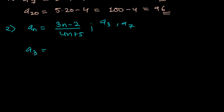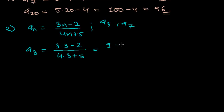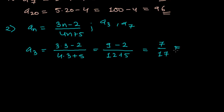For a3, I'm just going to replace n by 3. That gives (3×3 - 2) divided by (4×3 + 5). So 3 threes are 9, minus 2. And 4 threes are 12, plus 5. So 9 minus 2 is 7, and 12 plus 5 is 17. So a3 = 7/17.